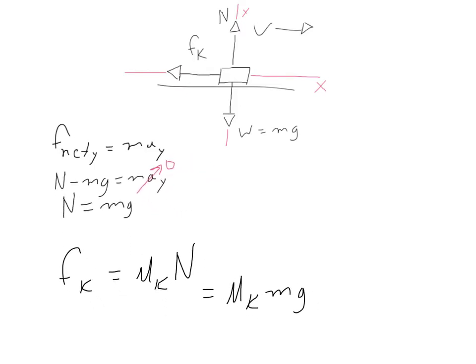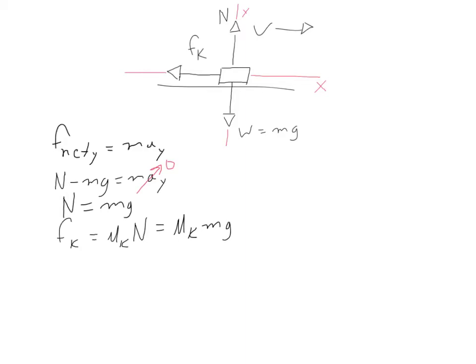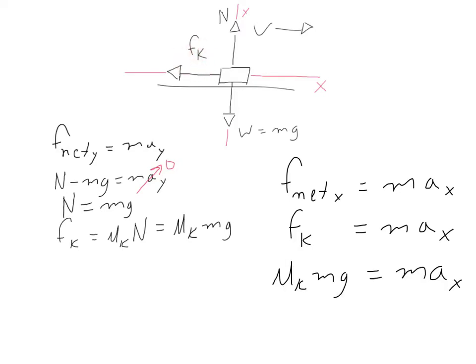We used the F_net_y equation specifically to find normal force, because normal force is in the friction equation, and friction is an x-axis force. Now we write F_net_x = ma_x, typically solving for x-acceleration. In this example, the only x-axis force is sliding friction. The equation for sliding friction is mu_k × m × g, found from the y-axis equation. Putting this into the x-axis equation, the mass conveniently cancels on both sides.